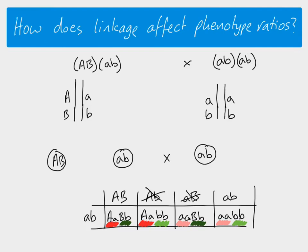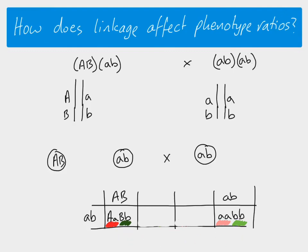We have to remove the gametes that no longer exist, which means certain genotypes for the offspring are no longer possible, and therefore those phenotypes are not possible either. So how does linkage affect the phenotype ratios? We now only get two possible phenotypes in our offspring as a result of those genes being linked on the same chromosome. That explains linkage.